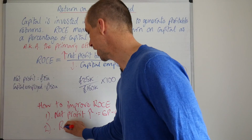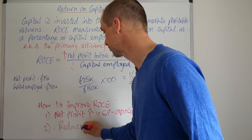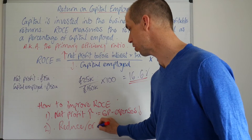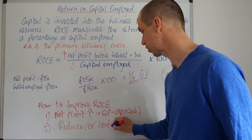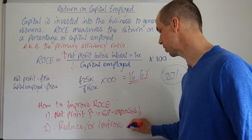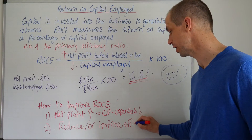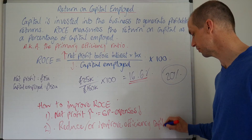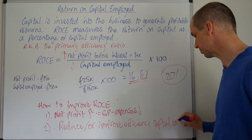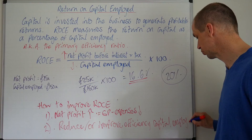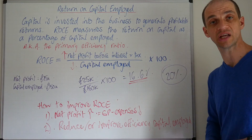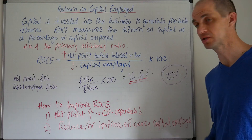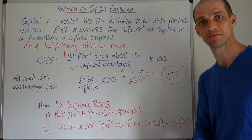So anything to reduce or improve the efficiency of capital employed is going to be really powerful. We've got two key areas: improve the efficiency of capital employed in the business, and ensure you're not just sitting on big bank balances with a lot of idle cash. Nice and straightforward — see you next time.